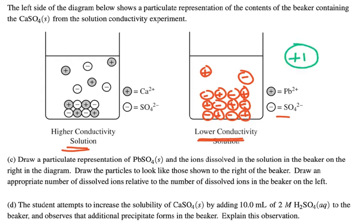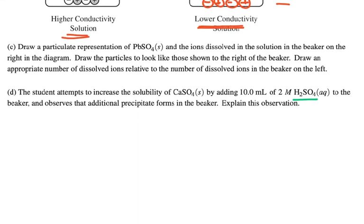Letter D, the student attempts to increase the solubility of calcium sulfate by adding 10 milliliters of 2 molar H2SO4 hydrogen sulfate, again, that's the sulfuric acid, to the beaker and observes the additional precipitate forms in the beaker. Explain this observation.